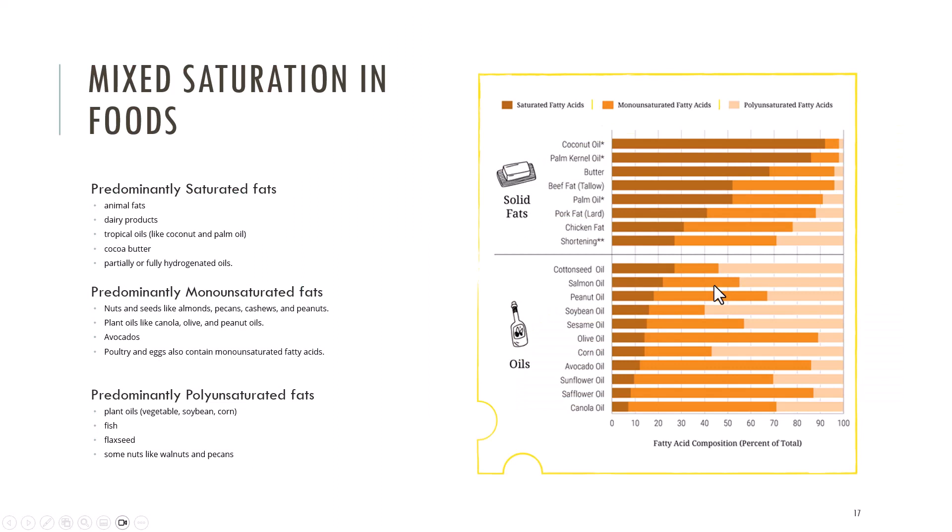When we look at common sources of fat in our diet, we can see that they have all different types of fats, but one type is predominant. This table is broken down into primarily saturated fat foods and primarily unsaturated fat foods on the bottom. The darker orange color represents the saturated fat, and we find that the animal fats and tropical oils contain the highest sources of saturated fat.